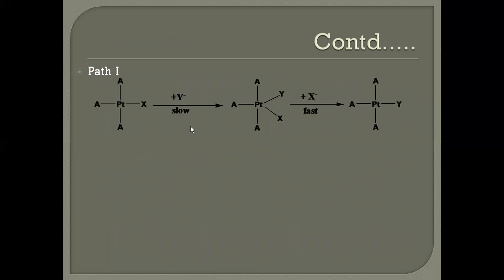In path one, Y directly replaces X by attacking the metal's empty pz orbital and coordinating with the platinum complex to form a five-coordinated species. In a fast step, X is then displaced to give the desired square planar complex. In the slow step, both the incoming ligand and the complex are involved, so the rate depends on the concentrations of both — making it second order kinetics.